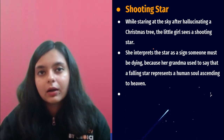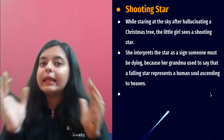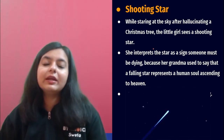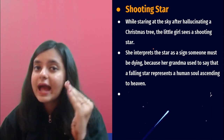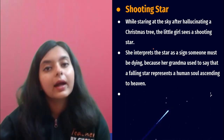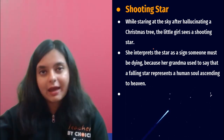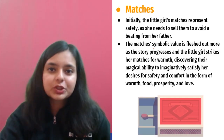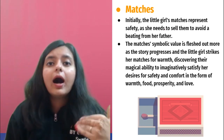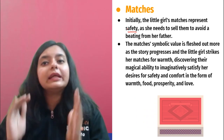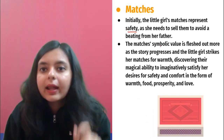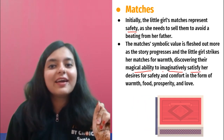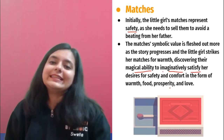The other wishes — the visuals of roasted goose and all that — were her basic needs, and those could not be fulfilled. But the wish of seeing her grandmother and meeting her in heaven was fulfilled, symbolizing that shooting stars do fulfill our wishes. Regarding the symbol of matches: initially it represents her safety, as she was trying to light the matchstick to keep herself warm in the biting cold. However, the match also symbolizes her magical ability to imaginatively satisfy her desires for safety, comfort, warm food, prosperity, and love.